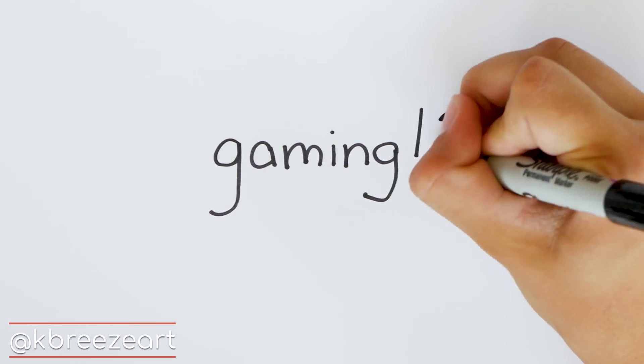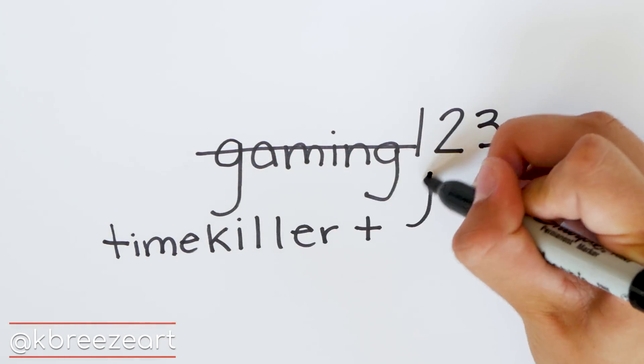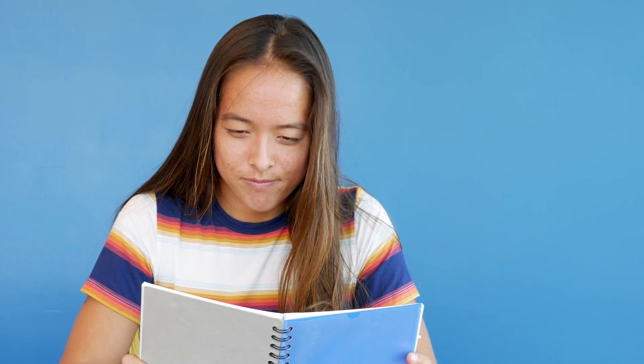The first option is to write them down on a piece of paper. If you're going this route, never write the password as is. Use things to help you remember something cryptic. Instead of writing 'Gaming123', which is your password, write 'TimeKiller plus 123'. This way, anyone who finds your list of passwords will have to do a lot of deciphering to figure them out.